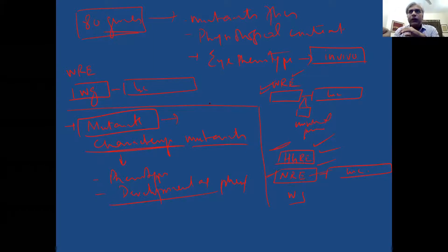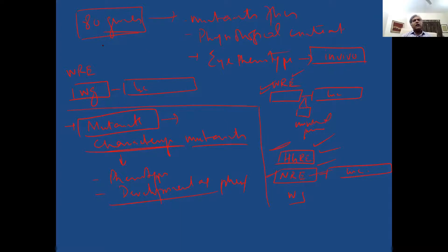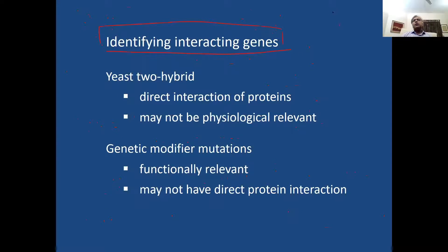In the post-genomic era we have to understand the function of our candidate gene — how it plays a role in, say, eye development. We know the whole proteome and the relationship between genome and proteome. Genes don't work in isolation; a single gene giving an eye phenotype doesn't mean it's working alone. We have to find the biological context within the protein's biochemical pathways, using functional genomics tools or hardcore biochemistry.